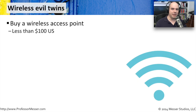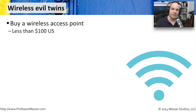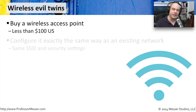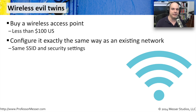When the bad guys are putting together a rogue access point, it's for much more nefarious means. They really want access to your network or they want access to what people are putting through the network. That's where a wireless evil twin comes into play. It's very simple to do — you grab an access point, purchase one. In the United States, you can get one for well under $100 these days. You plug it into the network and configure it exactly the same way as the existing network. This is why open access points with no password can be such a security concern, because it's very easy to duplicate an open wireless system.